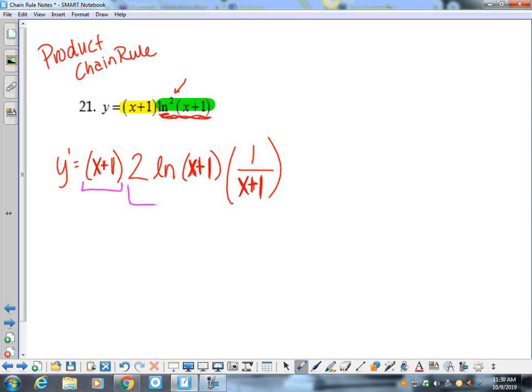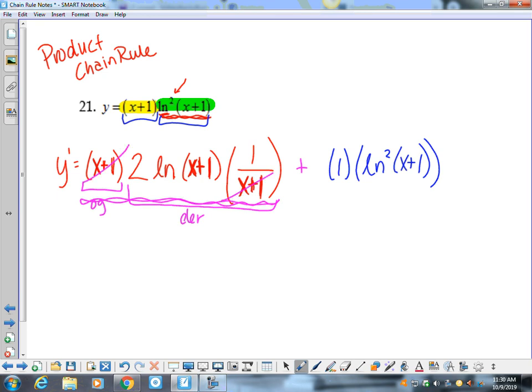This is the leave it derivative. So original derivative. Okay. I've got to finish my product rule plus. So now I do derivative which would be 1 and then leave it which is LN squared X plus 1. Okay. On this massive island right here I can cancel that and that. so I have 2 LN X plus 1 plus LN squared X plus 1 which is your answer.